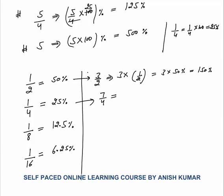Seven by 4 equals 8 minus 1 by 4, which equals 2 minus 1 by 4. Two means 200 percent and 1 by 4 means 25 percent, so 7 by 4 equals 175 percent. Once you know 1 by 4, you can always calculate related fractions. One by 8 is very important because you can derive many related fractions from it.